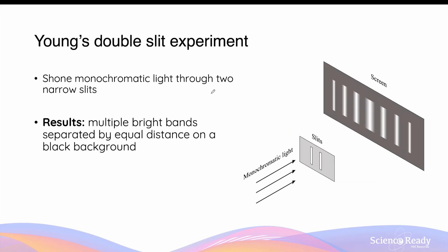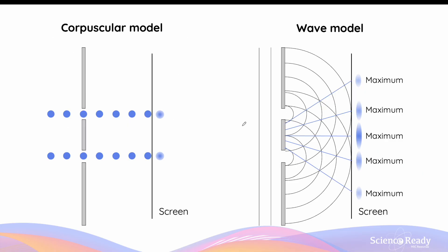In Thomas Young's double slit experiment, he shone monochromatic light through two narrow slits separated by a very small distance. The light produced multiple bright bands separated by equal distances on a black background screen behind the double slit apparatus. This observation refuted Newton's corpuscular model, as in the particle model of light only the corpuscles traveling directly through the two narrow slits would produce a bright spot — so Young would have only observed two bright spots.